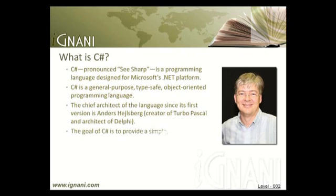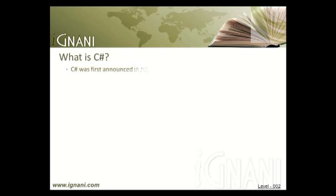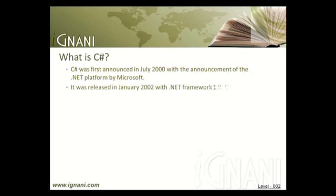The goal of C-Sharp is to provide a simple, safe, modern, object-oriented, internet-centric, high-performance language for .NET development. C-Sharp was first announced in July 2000 with the announcement of the .NET platform by Microsoft. It was released in January 2002 with .NET framework 1.0.